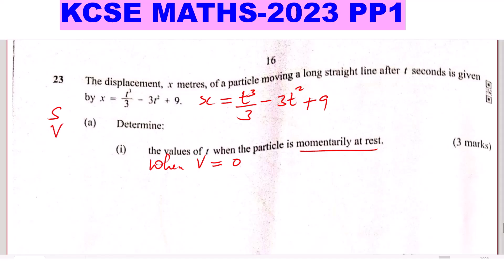You differentiate velocity to get acceleration. So in this case, we are going to differentiate displacement, or what we call the distance. Velocity will be given by differentiating x with respect to t. That will give us velocity. And when you differentiate this function, this is what you're going to get.